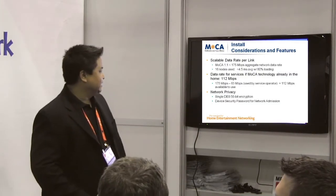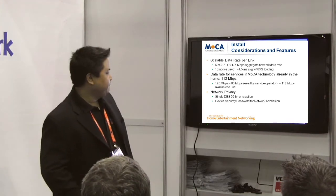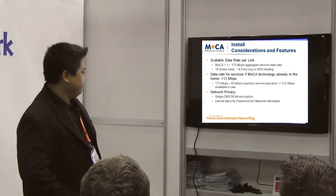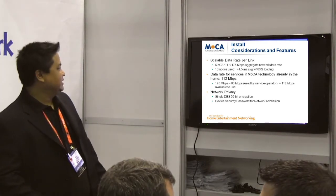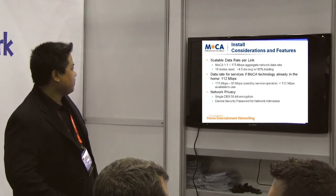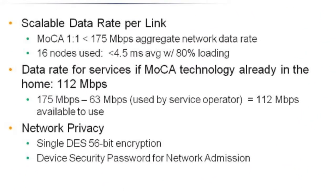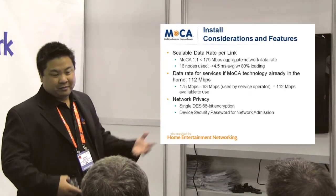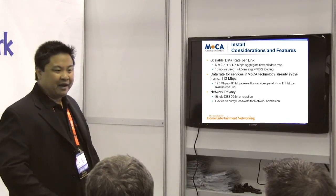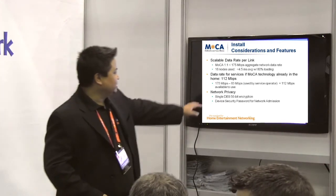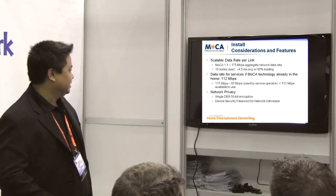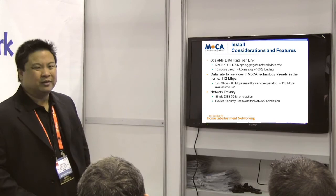Here's a typical topology for the installation, including the MoCA filter. In terms of installation considerations: 175 megabits of aggregate network traffic — meaning send and receive from all devices should add up to 175 Mbps max, with up to 16 nodes. The typical data rate for MoCA internet traffic is 112 megabits. For reference, surface fiber uses about 40 to 50 megabits, so you have about 112 Mbps available. MoCA also has encryption and password capabilities.